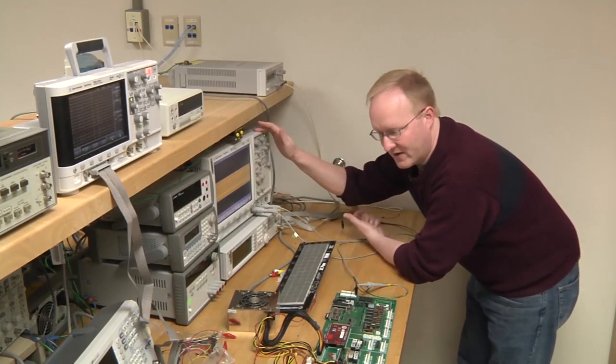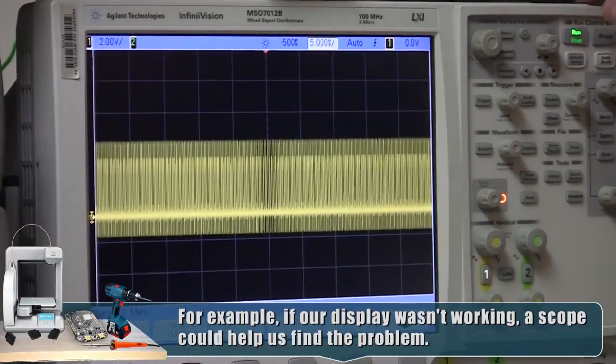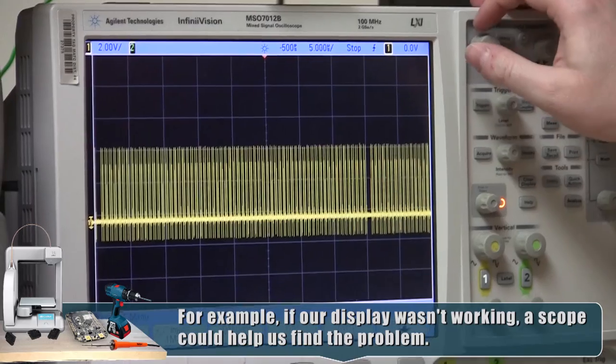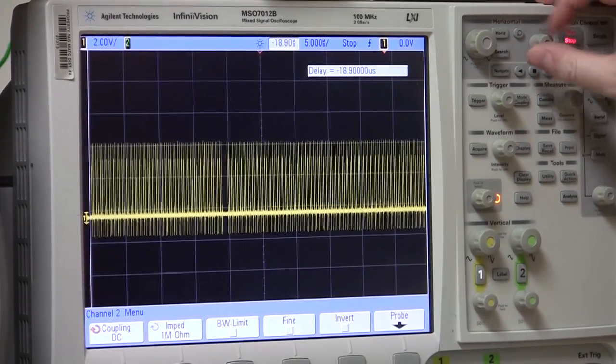So basically, the scope is a way of seeing what your signals are doing visually so that a human can understand them. Okay, I'm actually going to hit run-stop, and it will store its last state. Now we can look at what we captured.